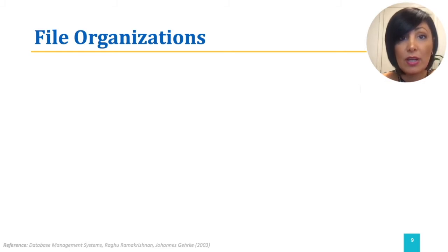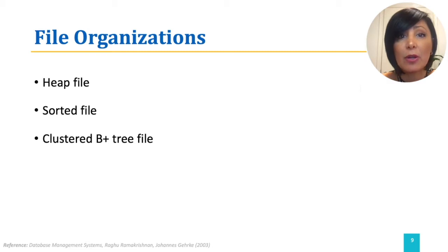We are going to consider file organizations such as a heap file, which is a file with data records stored in no particular order; sorted file, in which a file is sorted based on one search key; and clustered B plus tree file, which means the file records are clustered based on B plus tree sorted organization.